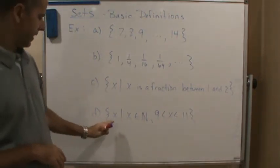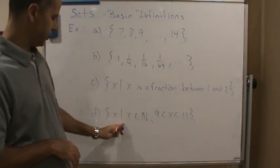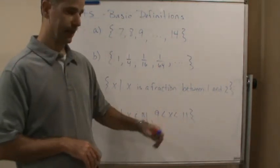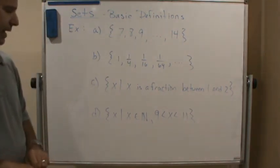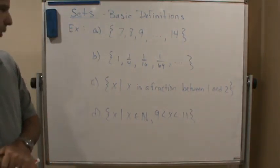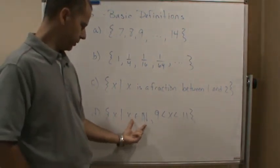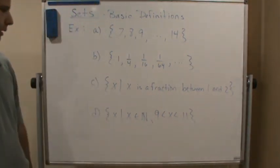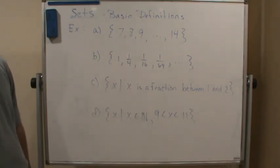And then D says the set of all x such that x is a natural number between nine and 11. Is that infinite or finite? We're talking about natural numbers between 11 and nine. In that case, there's only one. There's only one natural number between nine and 11. That's 10. So this is finite.